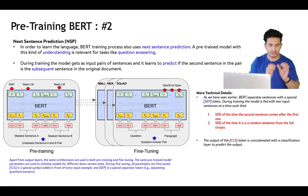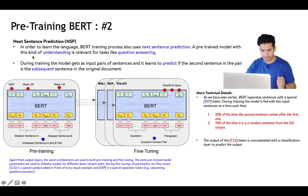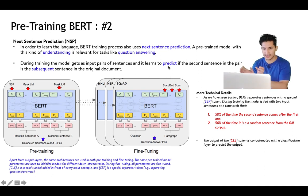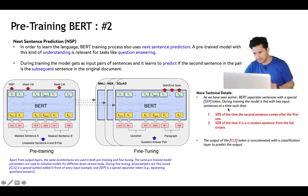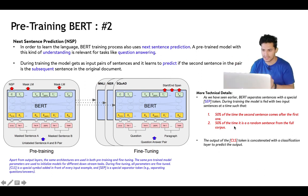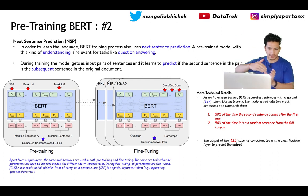The second task BERT is trained on is Next Sentence Prediction. This is where the class label and segment embeddings come in. The model receives a pair of sentences and must predict whether the second sentence is the subsequent sentence from the original document. 50% of the time the second sentence does follow the first, and 50% of the time it is a random sentence from the corpus.